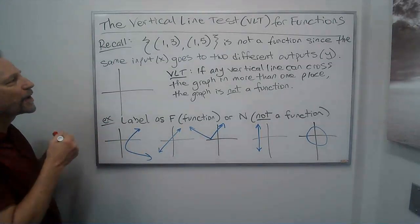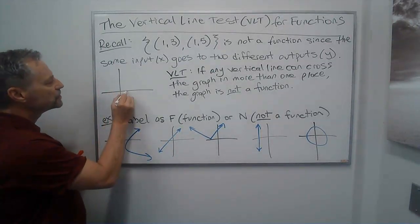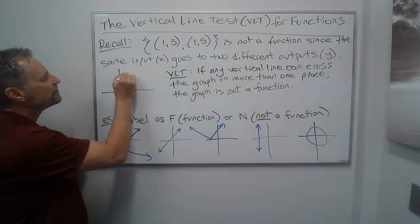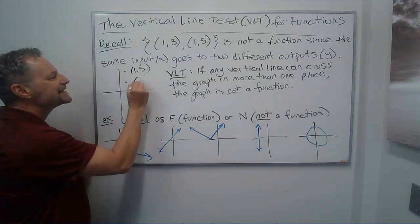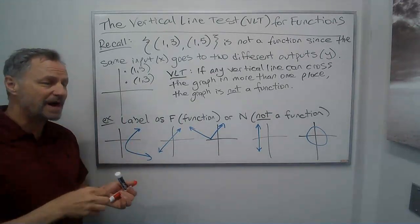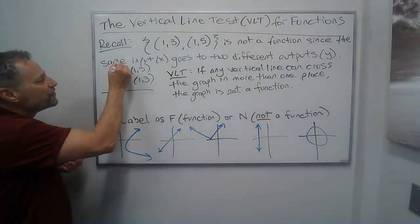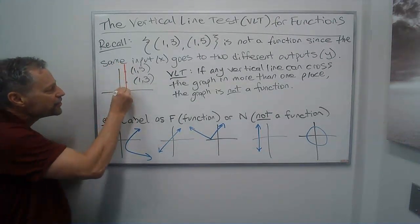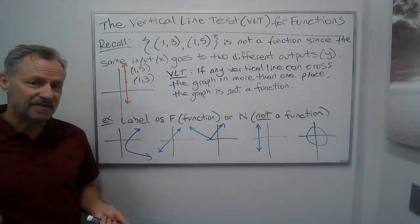If I graph the points (1,3) and (1,5), notice that anytime I have two points with the same x value and different y values, a vertical line would cross through those because they have the same x value.